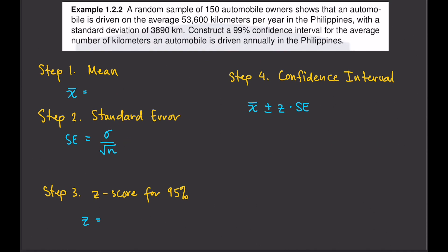A random sample of 150 automobile owners shows that an automobile is driven on average 53,600 kilometers per year in the Philippines with a standard deviation of 3,890 kilometers. Construct a 99% confidence interval for the average number of kilometers an automobile is driven annually in the Philippines.